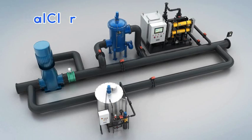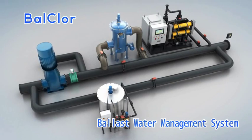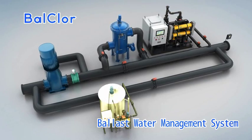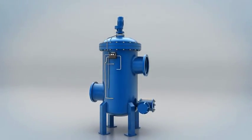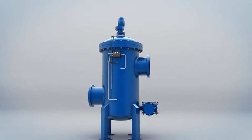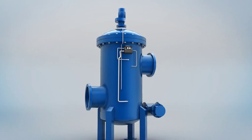There are three major components in Ball Chlor Ballast Water Management System: Filtration Unit, Electrolysis Unit and Neutralization Unit. During ballasting process, ballast water should flow through an automatic back flusher filter firstly after ballast pump.